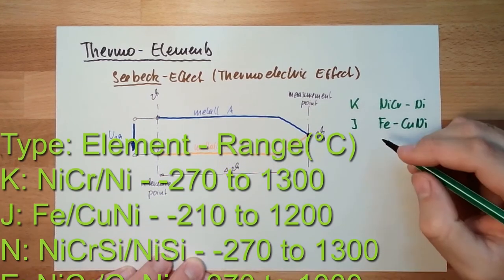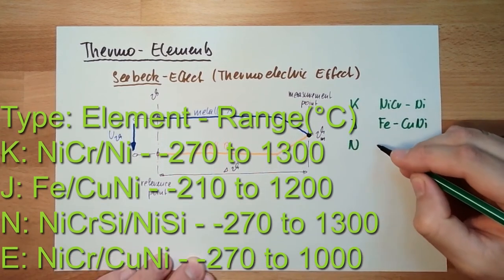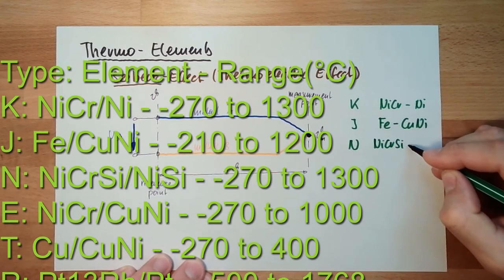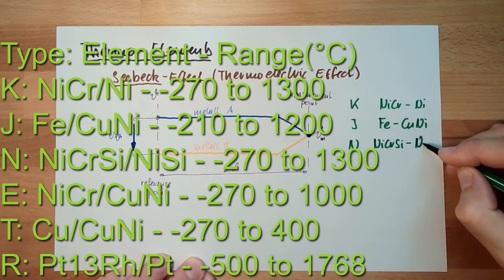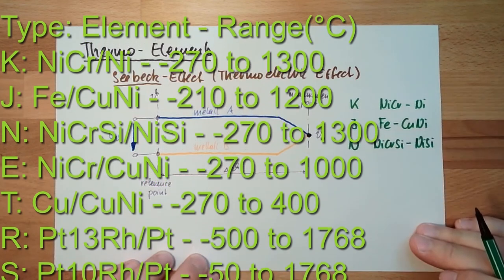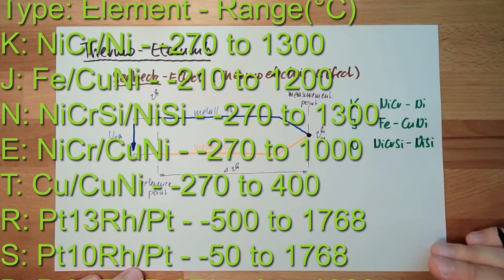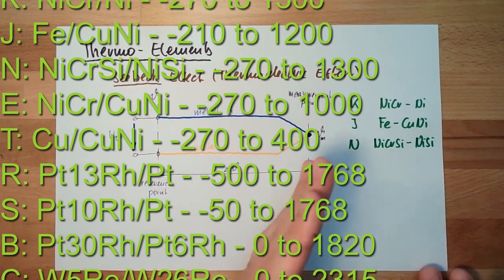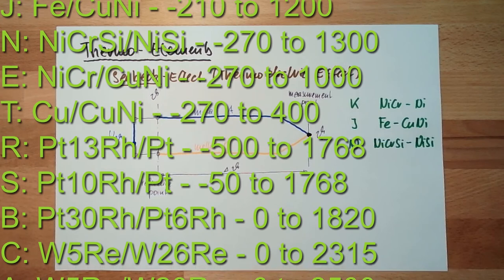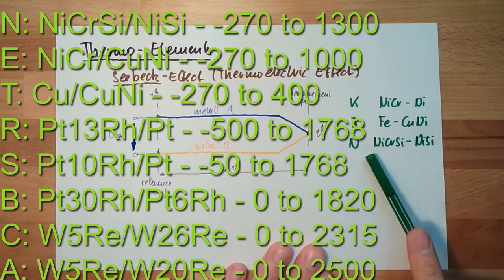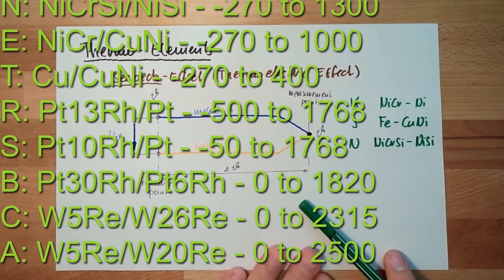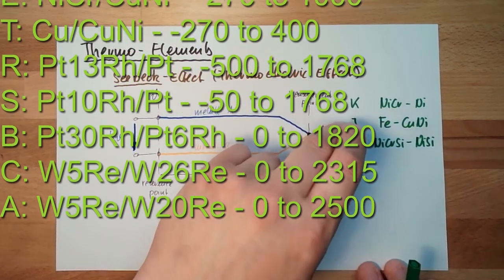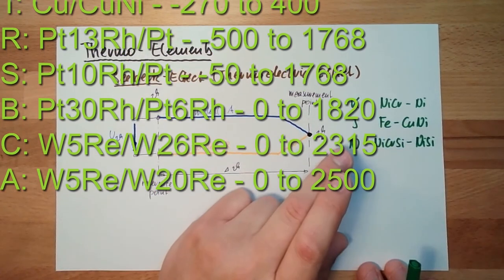There is type N - nickel-chrome-silicon, nickel-silicon. There are several types. They are always defined by a big letter.